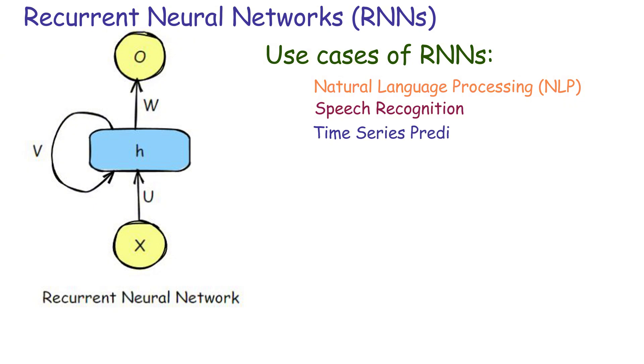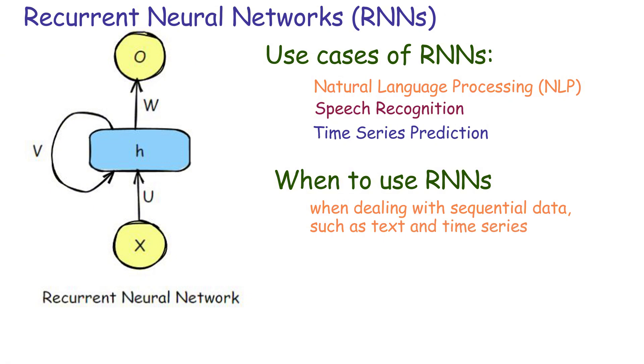When do we use RNNs? We use RNNs when dealing with sequential data, such as text and time series data, where the order of the data points is crucial. Their ability to remember previous inputs makes them ideal for tasks involving time series or text.